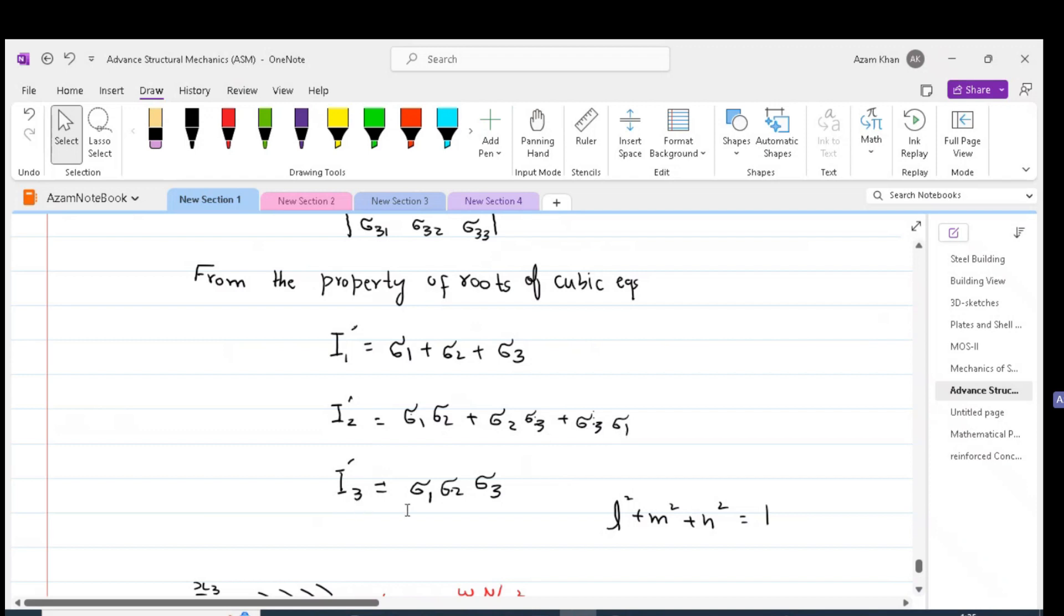And I3_prime is sigma_1 sigma_2 sigma_3. The quantity I1_prime, I2_prime, I3_prime shown over here are the invariants of stress tensor. That is, their values would be the same regardless of rotation of the coordinate axes.